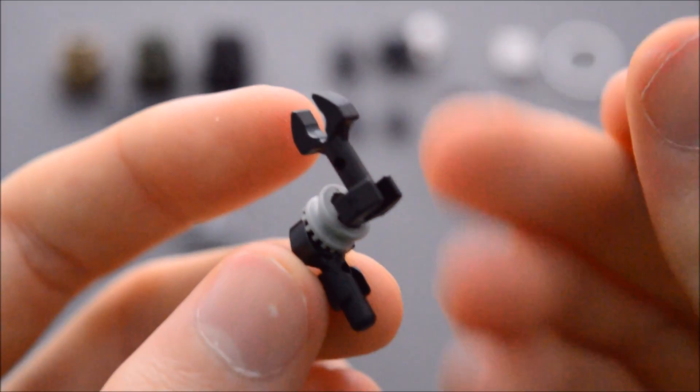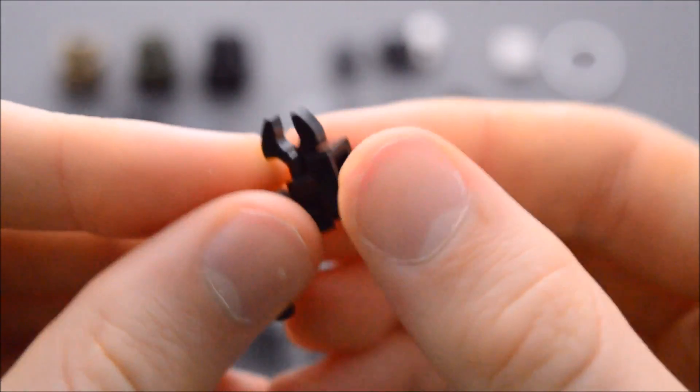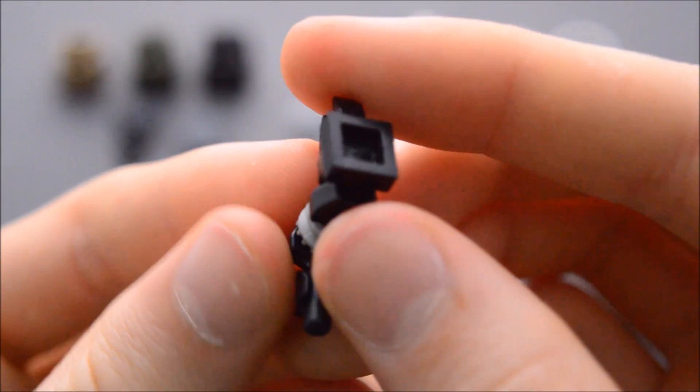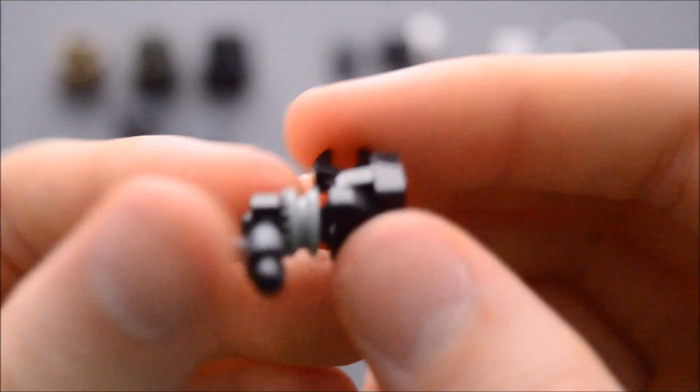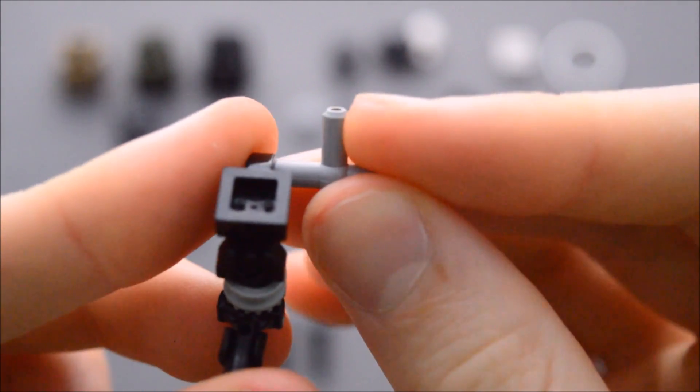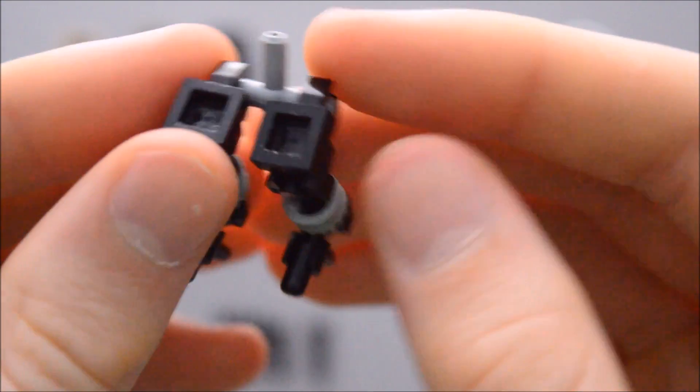And then we're going to attach another one by one tile with clip right there. So now we have both of our legs and we're going to take a pneumatic tee piece. This will make up the hips of the robot, of the drone. And then we're going to attach both the legs right there.